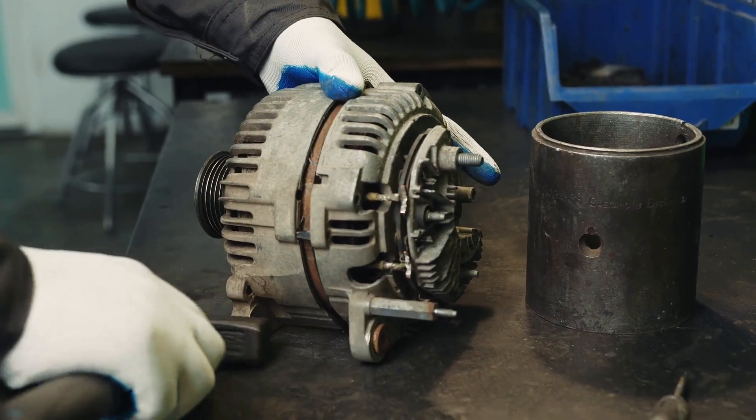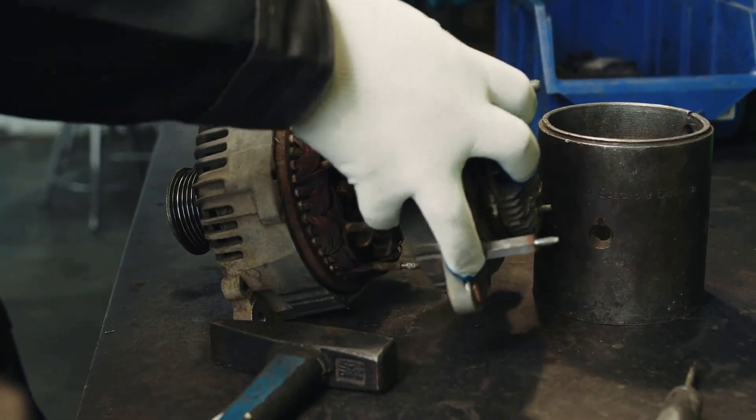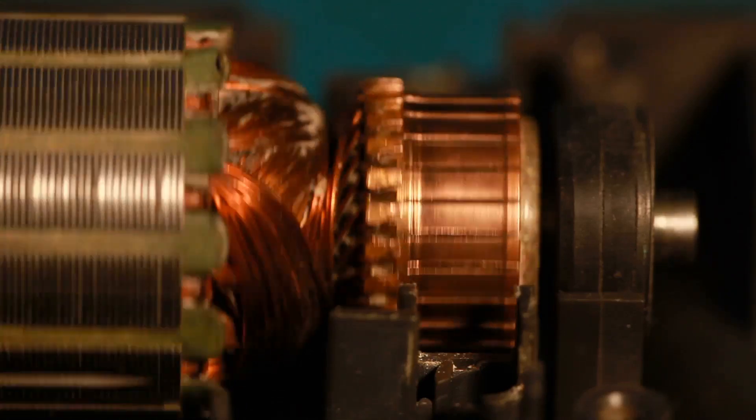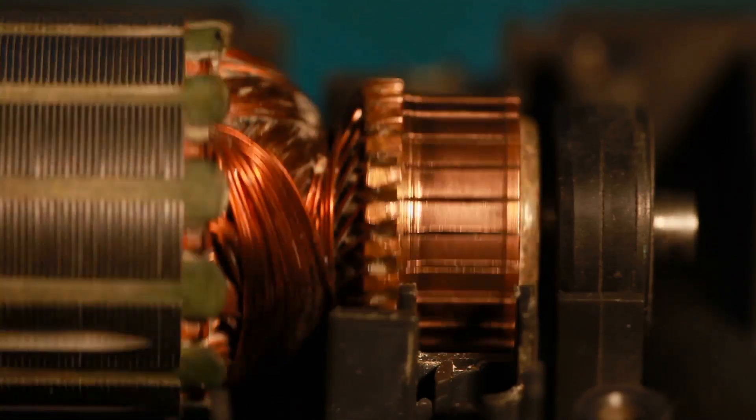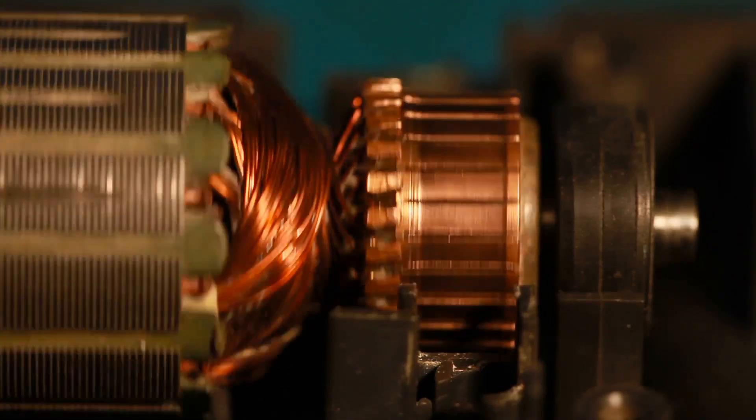That's where the commutator comes in. It's an ingenious device that ensures the motor keeps running. The commutator is a split ring connected to the loop of wire. It plays a vital role in the motor's operation.